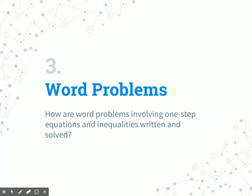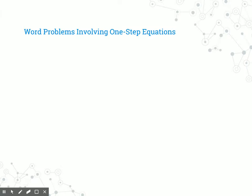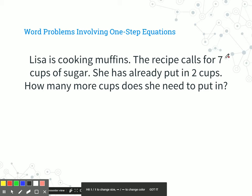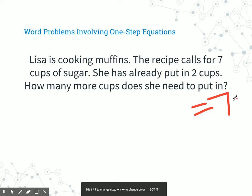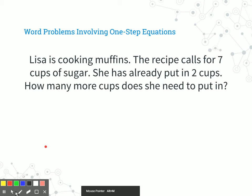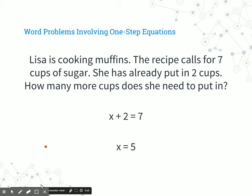Let's go over one last type of problem — word problems. Lisa is cooking muffins; the recipe calls for 7 cups of sugar, meaning everything has to equal 7. She has already put in 2 cups — how many more does she need? The total is 7. We know she already put in 2 cups, so we use x for the unknown. The equation is x plus 2 equals 7, because she already put in 2 and needs to put in more. Solving that, x equals 5.